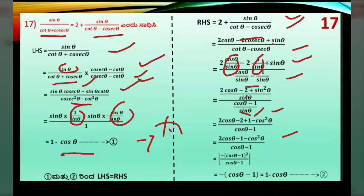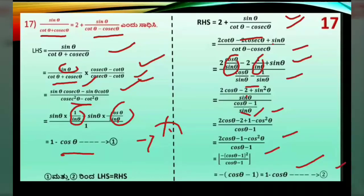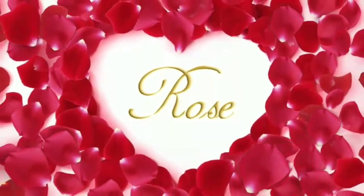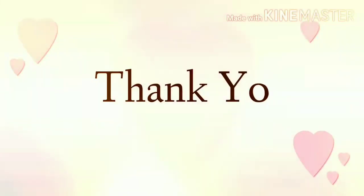1² plus cos²θ minus 2 cos θ. That is (cos θ minus 1) whole squared, divided by (cos θ minus 1). Now cos θ minus 1 and cos θ minus 1 cancel, leaving 1 minus cos θ minus 1, which simplifies the final result.